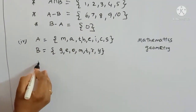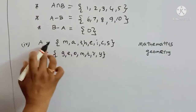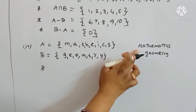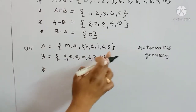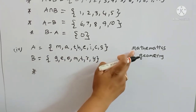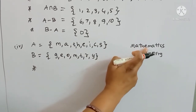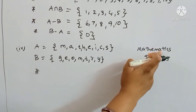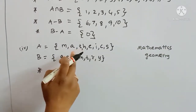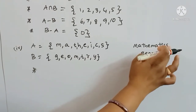In the fourth subdivision, we have a set of all letters of the word 'mathematics': {m, a, t, h, e, i, c, s}.